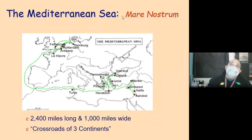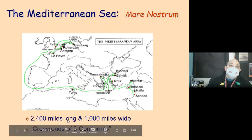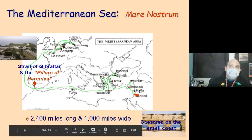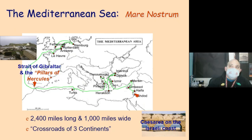The Mediterranean Sea — or as the Romans called it, 'Mare Nostrum' — is 2,400 miles long and a thousand miles wide at its widest point. You go from the Strait of Gibraltar, also known as the Pillars of Hercules, all the way over to the Israeli coast.